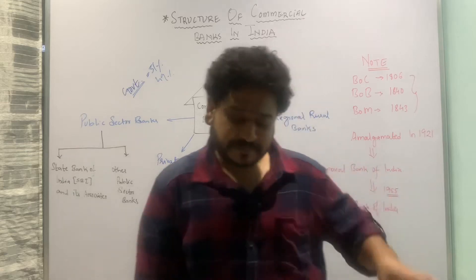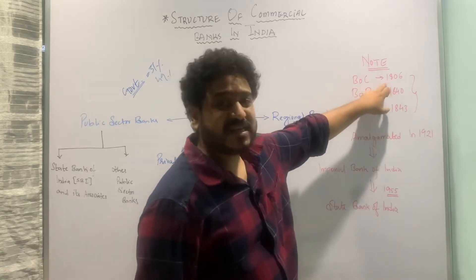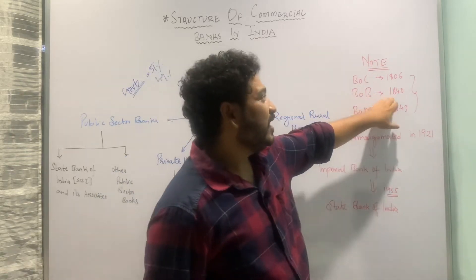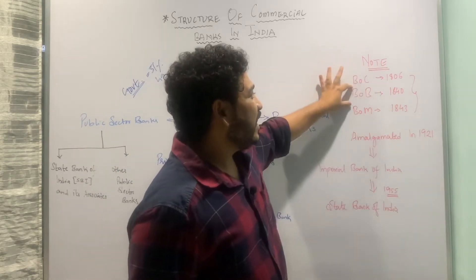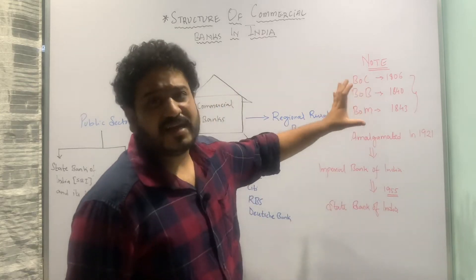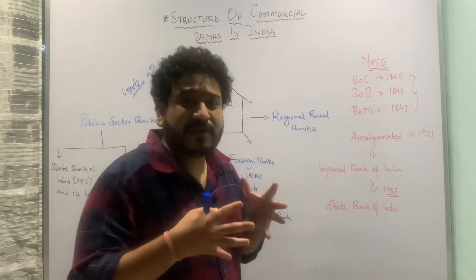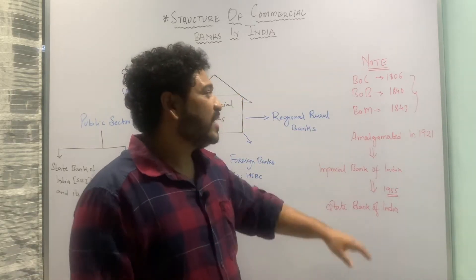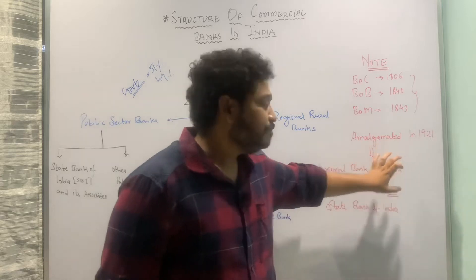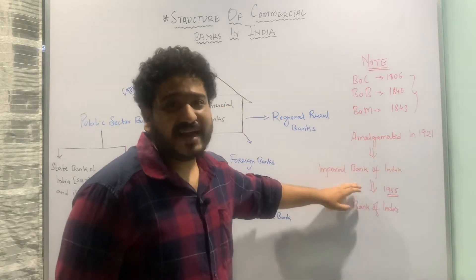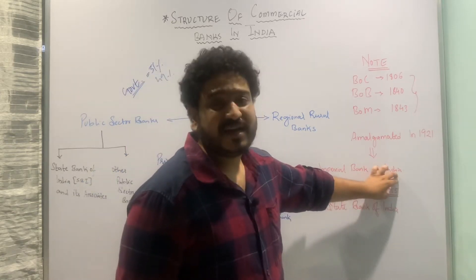Going back to the British era, we have the Bank of Kolkata established in 1806, the Bank of Bombay established in 1840, and the Bank of Madras established in 1843. These three banks served the three port cities that were primarily centers of British trade. They were amalgamated to form the Imperial Bank of India in 1921, which operated until 1955, when it was converted into the State Bank of India.